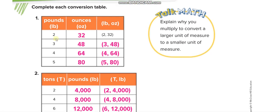Here they show a table to convert from pounds to ounces. One pound is 16 ounces, 2 pounds is 2 times 16 which is 32, 3 pounds is 3 times 16 which is 48, 4 pounds is 4 times 16 which is 64, and 5 pounds is 5 times 16 which is 80. The first row lists pounds: 1, 2, 3, 4, 5, and the second row lists ounces: 16, 32, 48, 64, 80.